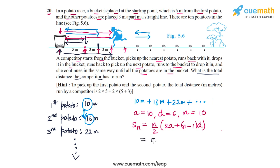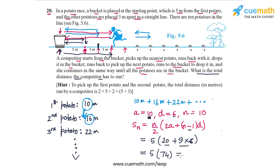n is 10, so n by 2 is 5. 2A is 20. n minus 1 is 9, and 9 into D (which is 6) gives 54. So this simplifies to 5 times (20 plus 54), which is 5 times 74, equal to 370. So the total distance the competitor will have to travel is 370 meters. The answer to this question is 370 meters.